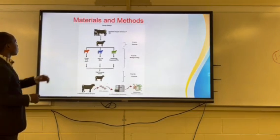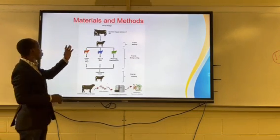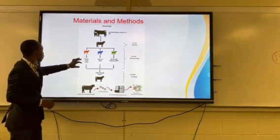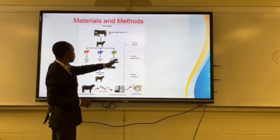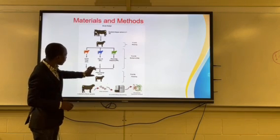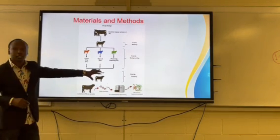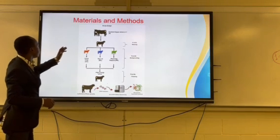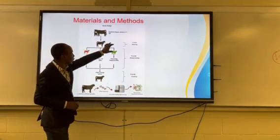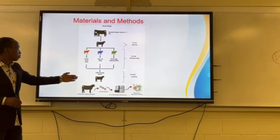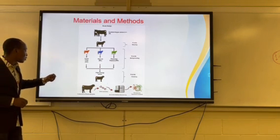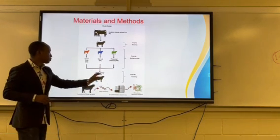For our materials and methods, we used 38 weaned calves in these experiments and they were divided into three groups: the cover crop, drylot, and the perennial pasture. These are the backgrounding groups, and after that they had a high energy diet which is the finishing phase. Fecal samples were collected at each of the timelines — weaning, backgrounding, and finishing — and the V4 region was sequenced to determine the bacteria population.